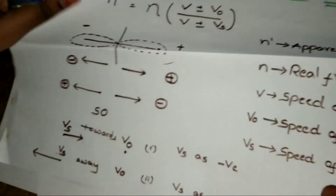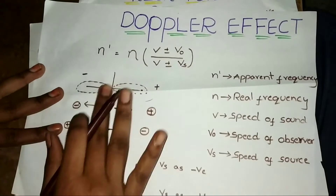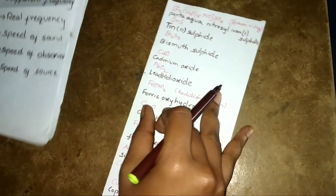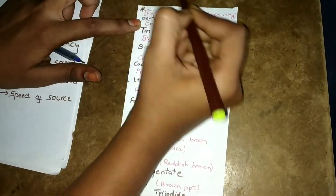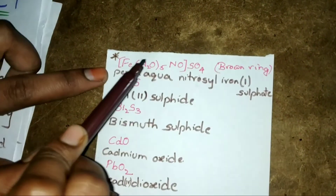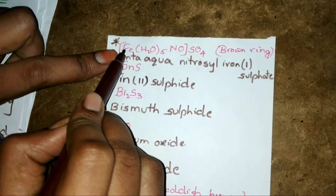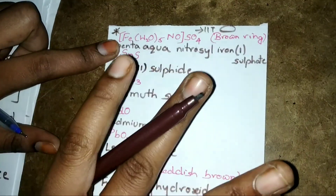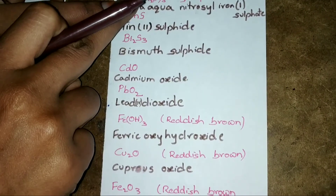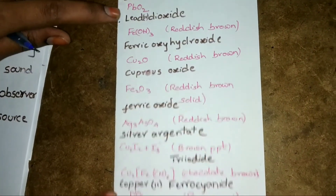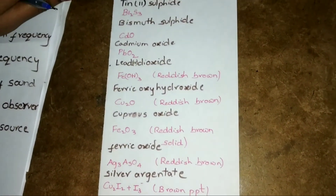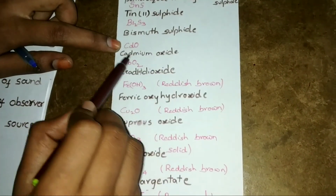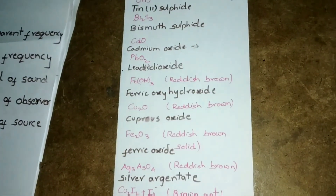I also wrote some chemistry notes in brown sketch. These are brown colored compounds — very important. Penta-aqua-nitro-so iron sulfate, also called the brown ring complex. The iron oxidation state is plus one. This was asked in IIT four times, so it is very important, especially for JEE Advanced.